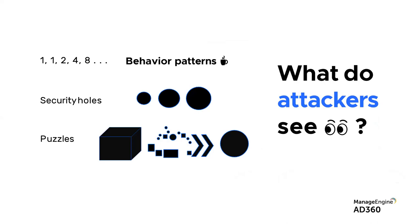What does an attacker look for? They look for an opportunity to get hold of your users, understand their behavioral patterns, and crack one of those accounts. There are a lot of business email compromises occurring right now. Attackers have sophisticated bots working in their favor, while administrators are struggling because users working remotely are no longer within your system or premise, so your SIM solutions aren't of great help.